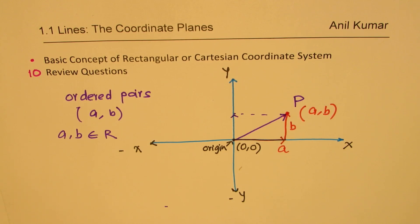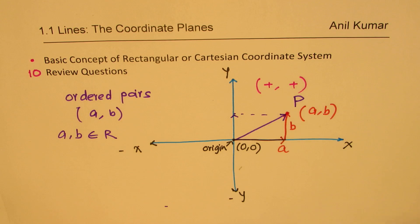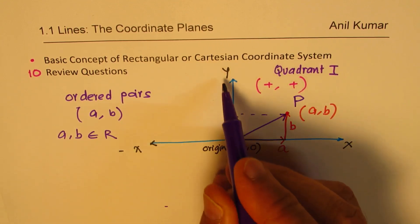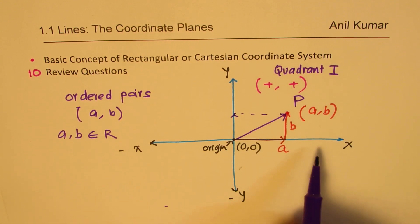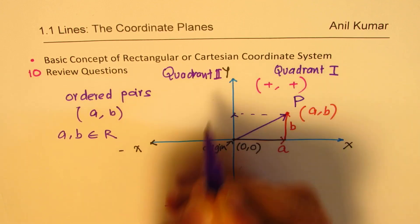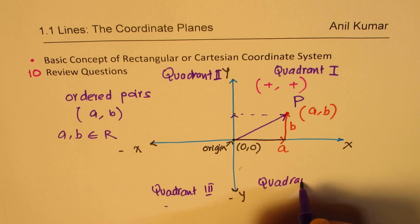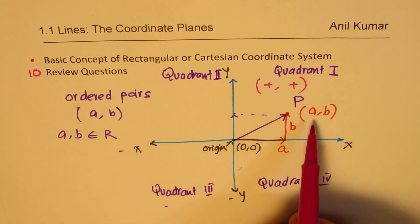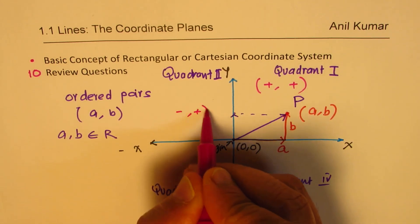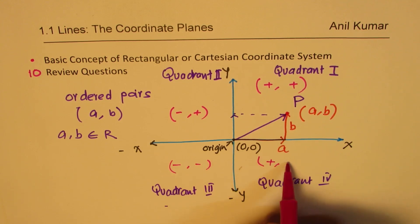You can notice that the coordinates of a point will be positive and positive in quadrant one. These two lines divide the whole plane into four quadrants: quadrant one, quadrant two, quadrant three, and quadrant four. In quadrant two, the value of a along the x-axis will be negative but along the y-axis will be positive. In quadrant three, both will be negative. And in quadrant four, the x value is positive and the y value is negative.